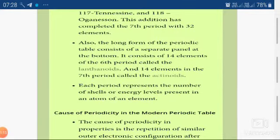The long form of the periodic table consists of a separate panel at the bottom. It consists of 14 elements of the sixth period called the lanthanides, and 14 elements of the seventh period called the actinides. This f-block has been shown at the bottom of the periodic table for the sake of convenience. The first series is of lanthanides, which includes 14 elements, and the second series is of actinoids. Lanthanides and actinoids are commonly known as f-block elements or inner transition elements.